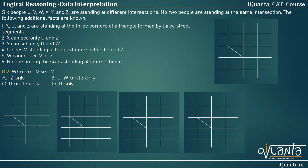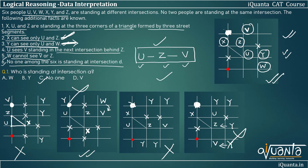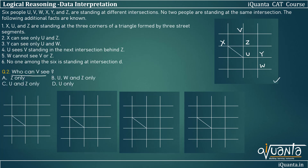The second question is: who can W see? We have only one valid arrangement. Looking at that arrangement, W can see Z and W can see U. So these are the only two people W can see. Option C is the correct answer.